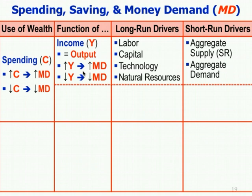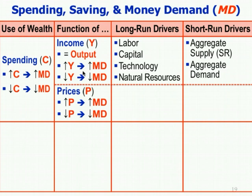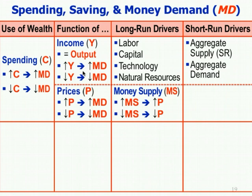The other variable influencing money demand or spending is prices. The higher prices are, then for any given level of consumption the higher the dollar value — so higher prices mean higher money demand, lower prices mean lower money demand. In the long run, remember the quantity theory of money: the long run drivers of increases in price level are increases in the money supply. And money supply is going to drive price levels in the long run — higher money supply means higher prices, lower money supply means lower prices.